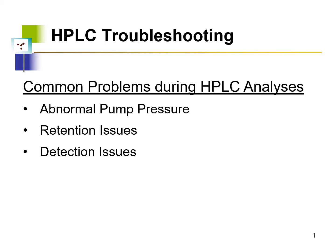In this next section of the HPLC topic, we're going to talk about some HPLC troubleshooting — common problems that we tend to see during HPLC analyses, what could be the causes of these problems, and how we go about solving them. Three of the most common problems are abnormal pump pressure, retention issues such as shifting of peaks where retention times start changing, and detection issues where we are not able to detect expected peaks or peaks may be particularly low or high.